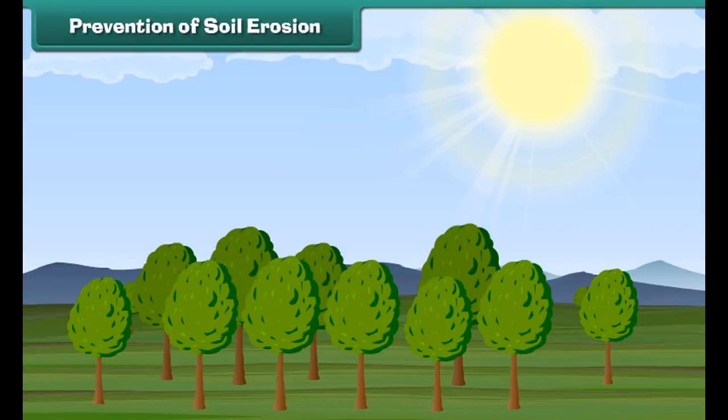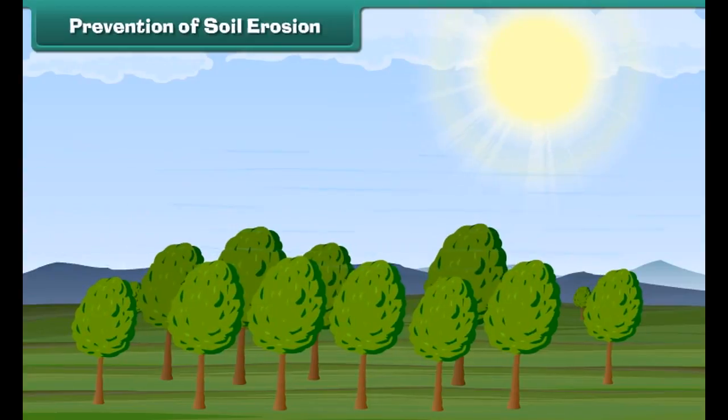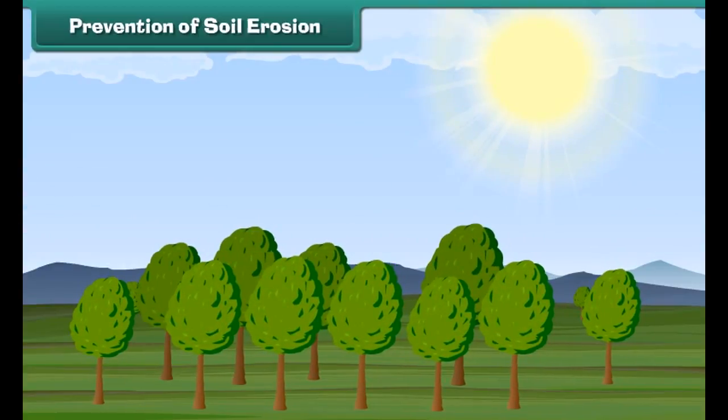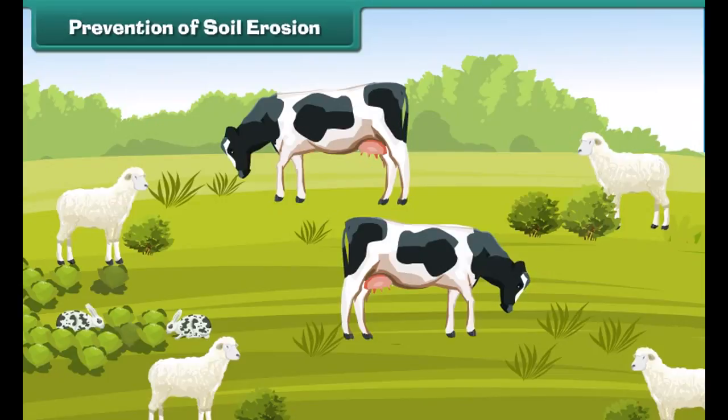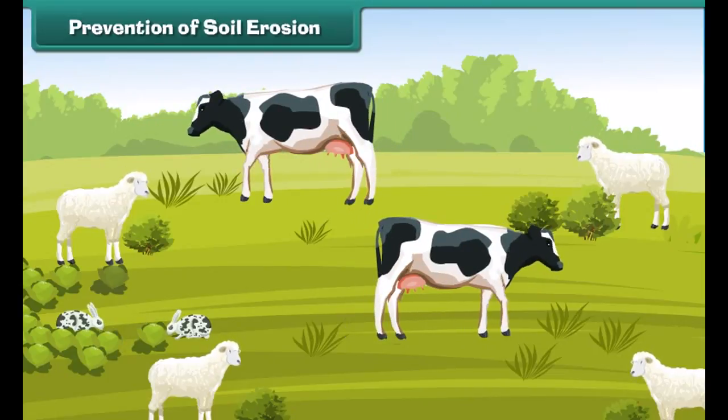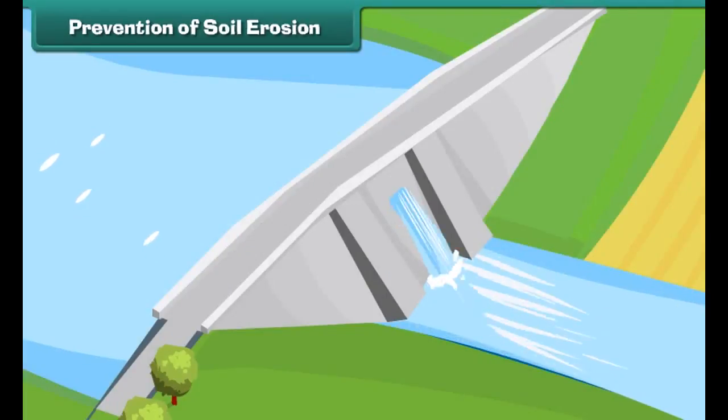There are many ways of preventing soil erosion. One of the most common ways is to grow more and more trees. The roots of trees hold the soil firmly and do not allow it to wash away easily.